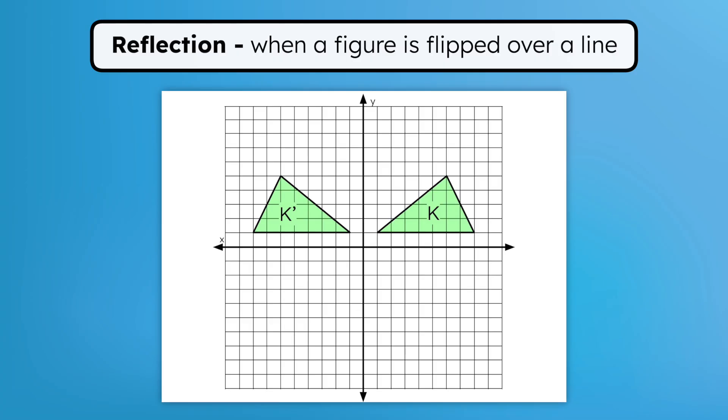This image is labeled K prime. And just like your face and its reflection in a mirror, the pre-image and image will always be the same distance from the line used for the reflection.